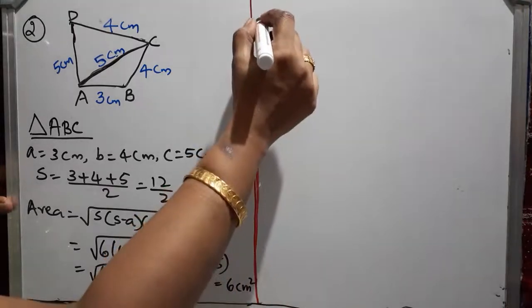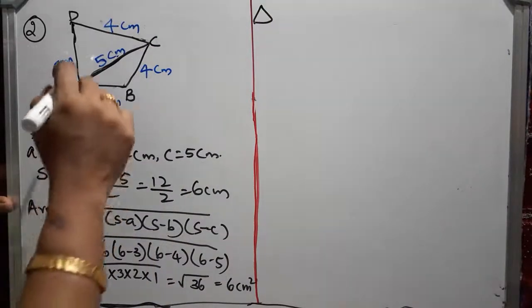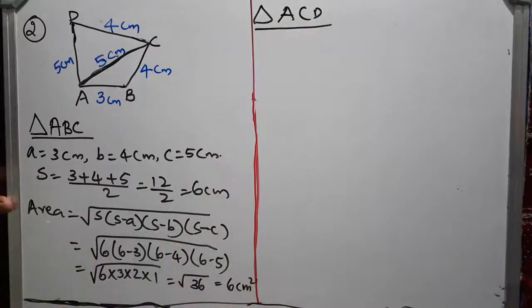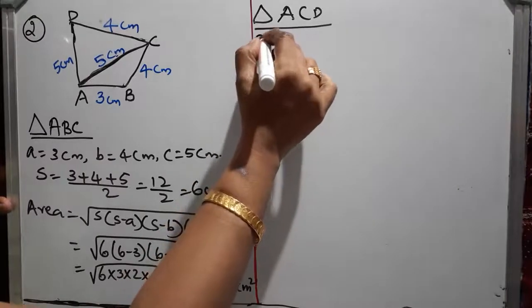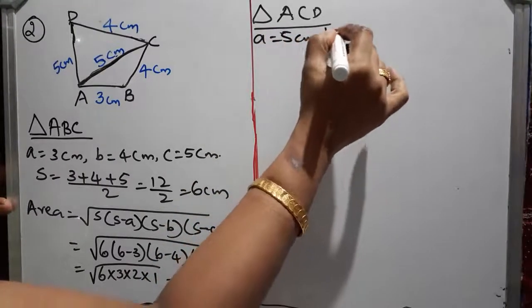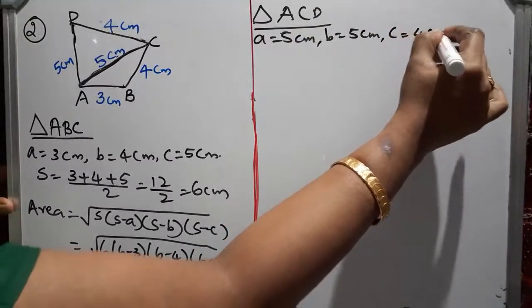Then we can go for finding the next triangle. Triangle ACD. In that you can take A equal to 5, D is equal to 5, and C equal to 4 cm.